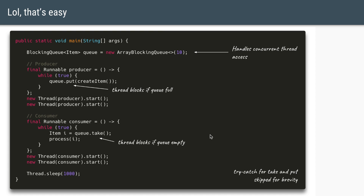This functionality looks complicated but it's easy to implement using a blocking queue. Java provides a BlockingQueue where you can give it a fixed size — in this case, 10. It is a thread-safe data structure, meaning multiple producers and multiple consumers can access this queue simultaneously without any issues.